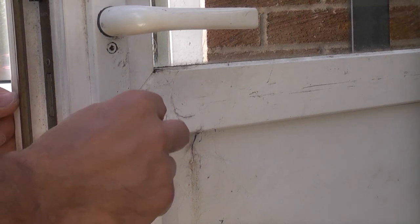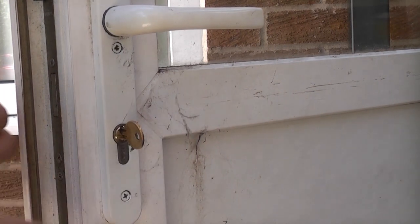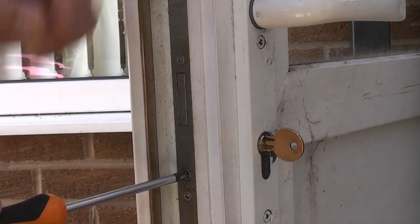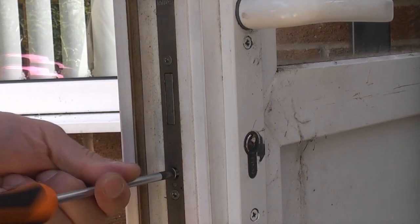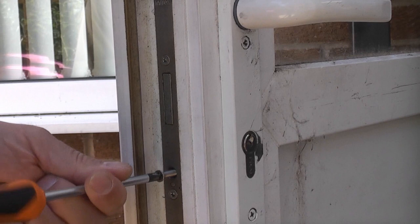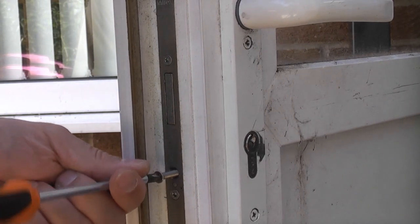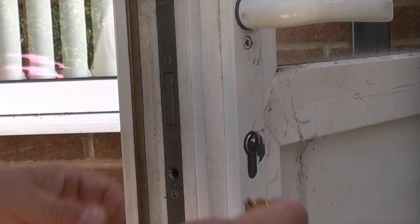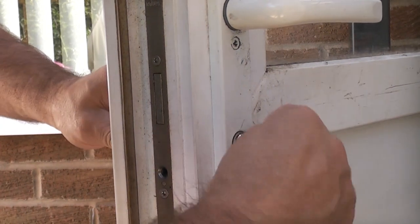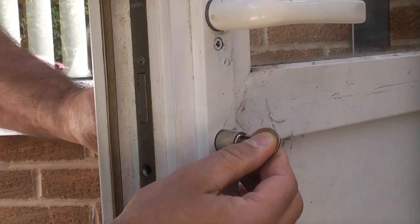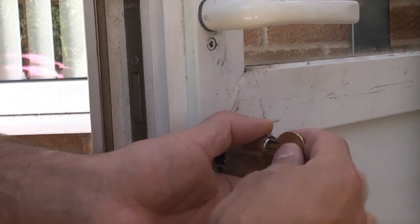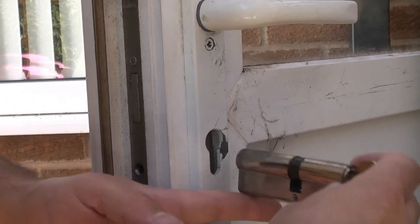So assuming you can operate the lock still, it's very easy to do. We simply need to remove this screw in the center which holds in the Euro cylinder. Then we can insert the broken part of the key and carefully push that back out. You do need to turn the key in order to get the Euro cylinder out, which is why you need to be able to turn it.